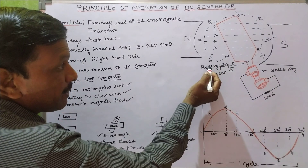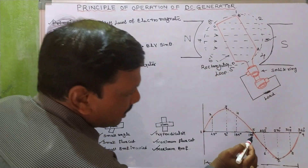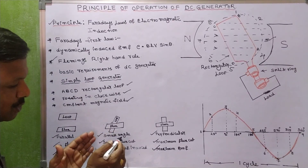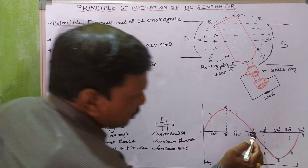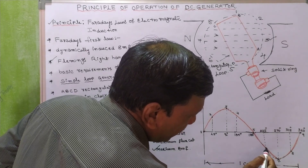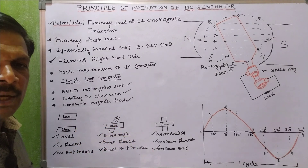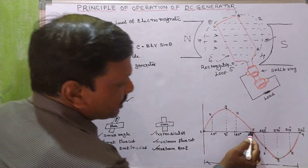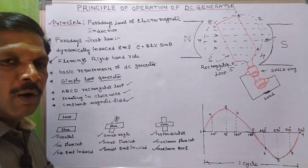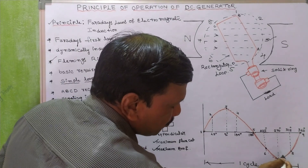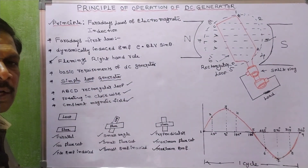At position number six, which is at the opposite pole, a small flux cut takes place and small EMF is induced, but this EMF is in opposite polarity. At position number seven, maximum flux cutting takes place and maximum EMF is induced, also in opposite polarity. At position number eight, again small flux cut and small EMF is induced.